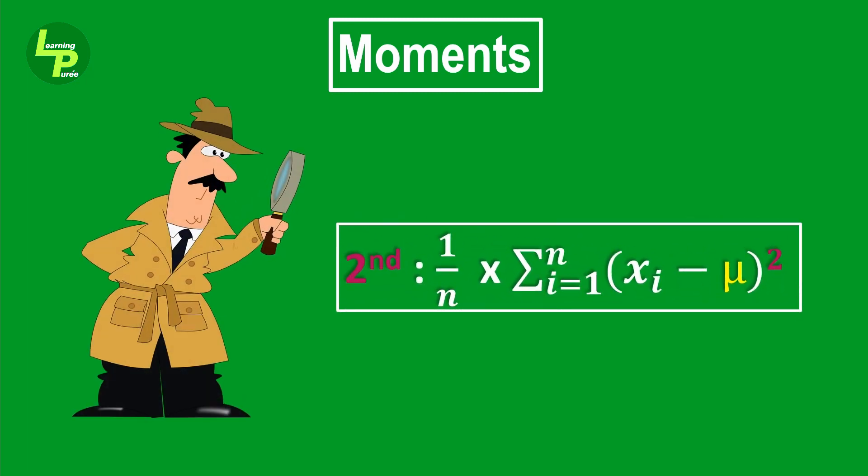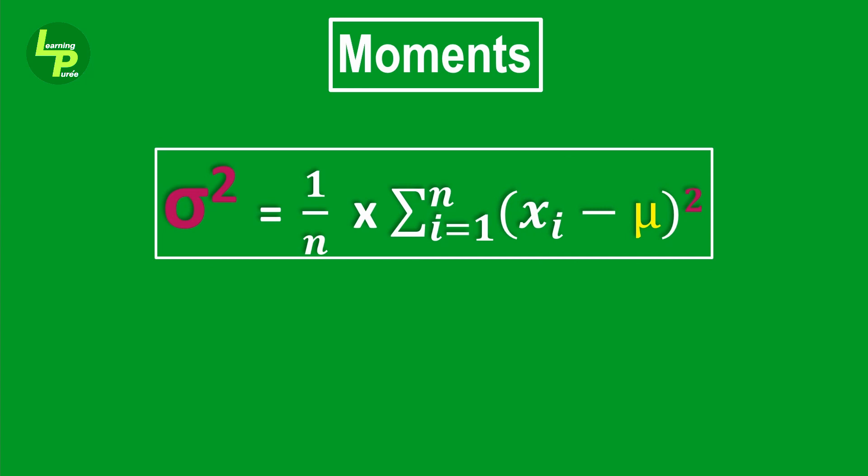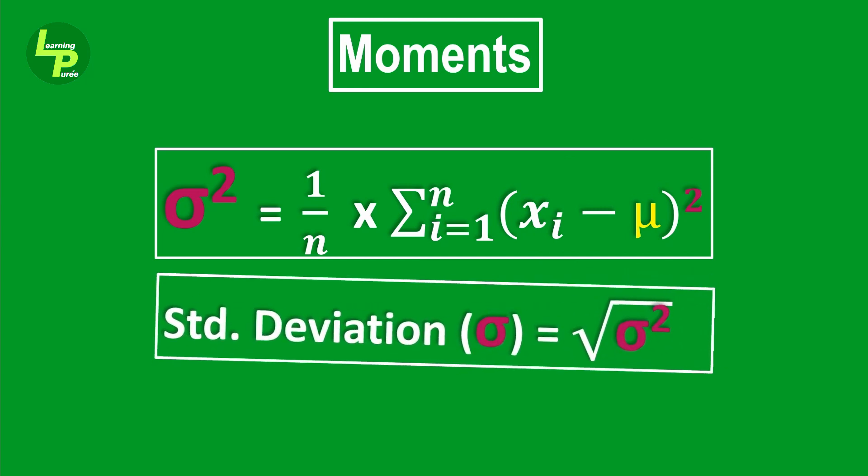We have seen earlier that the second moment is the variance, which is denoted by σ². Further, the standard deviation is the square root of variance denoted by σ. We had earlier used the mean to shift the origin in the second order moment.